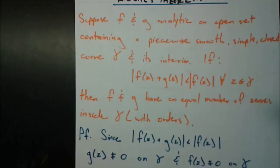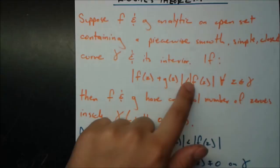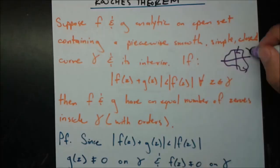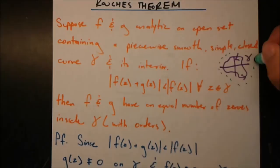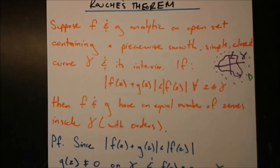Before we go into the proof, let's think about what this means. If the modulus of f(z) + g(z) is always less than the modulus of f(z) for every single point on gamma — let's draw a picture. Say we have a complex plane with some curve gamma meeting all the criteria. If f and g are analytic on some open set containing this gamma — shown in green — and this modulus condition holds everywhere on gamma, then f and g have an equal number of zeros inside gamma, counting orders.